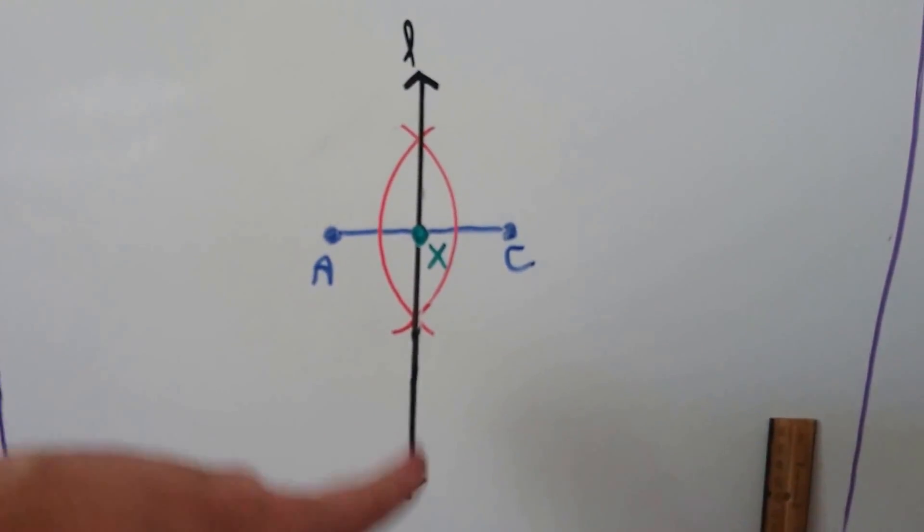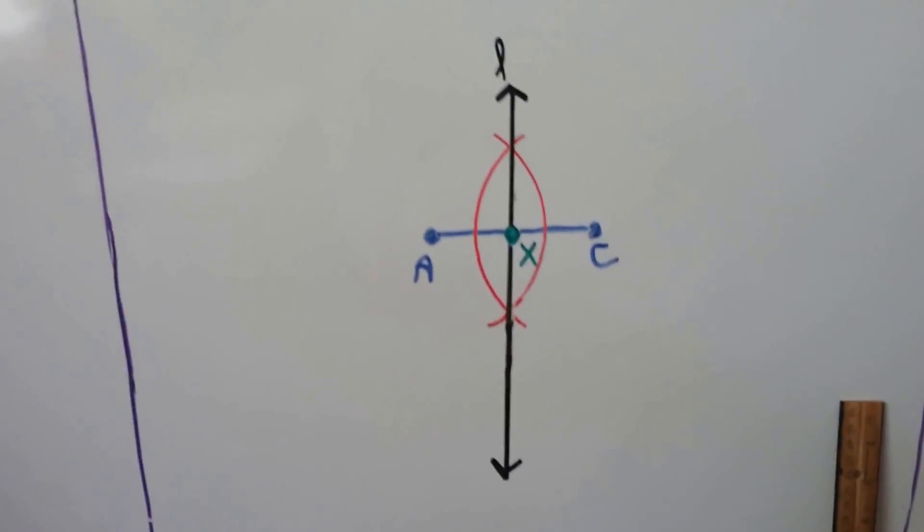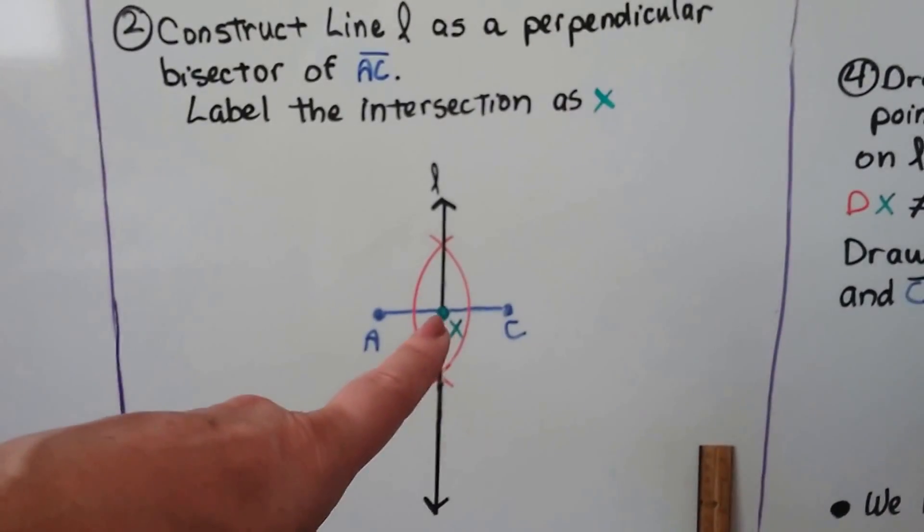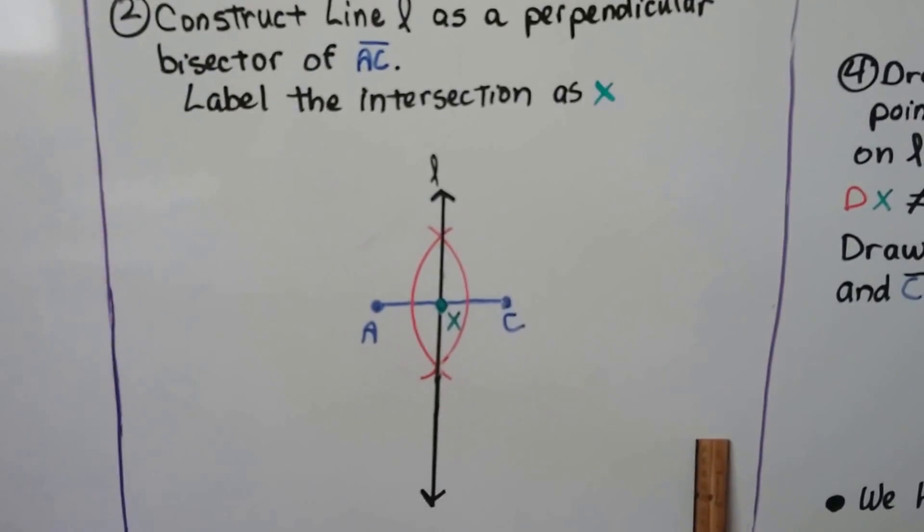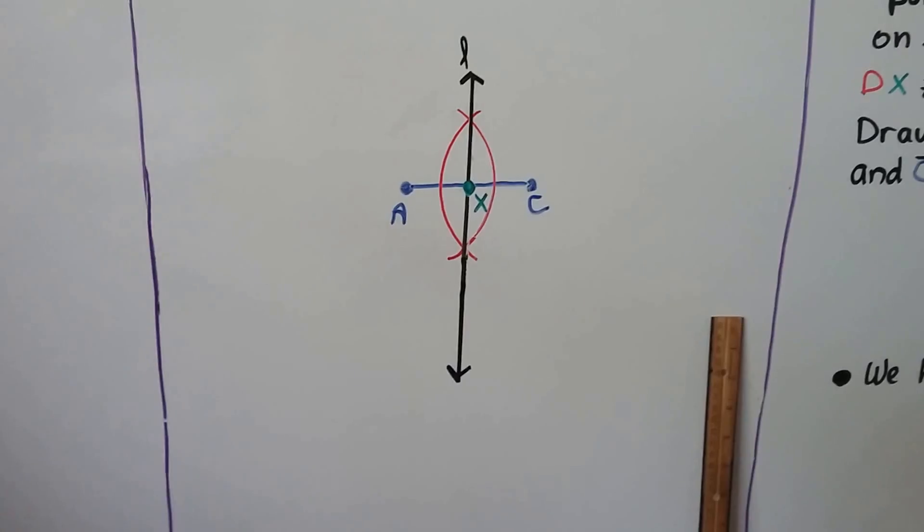And where the two arcs intersect, we'll draw line L through that and make it a little bit long on the bottom if you want this to be the longer side of the kite. We label the intersection as X right there. You can just use a ruler to draw your line L.